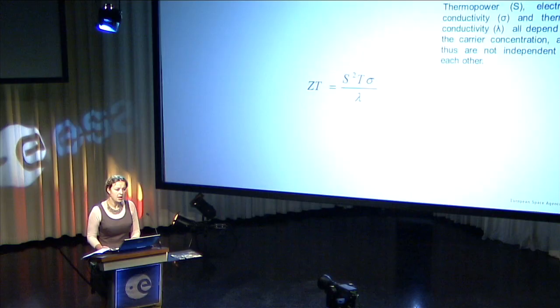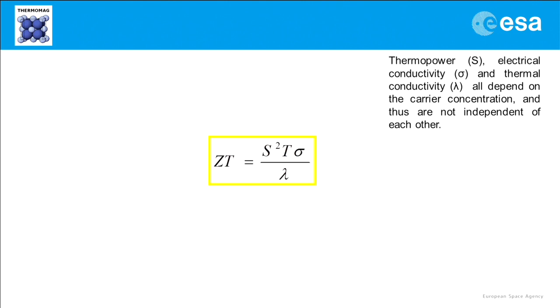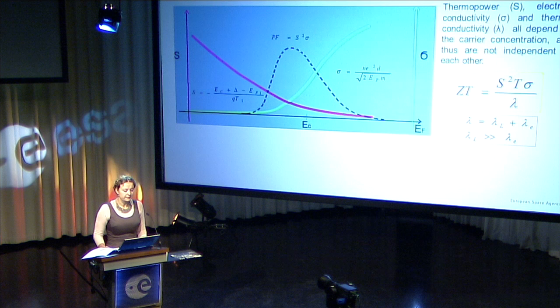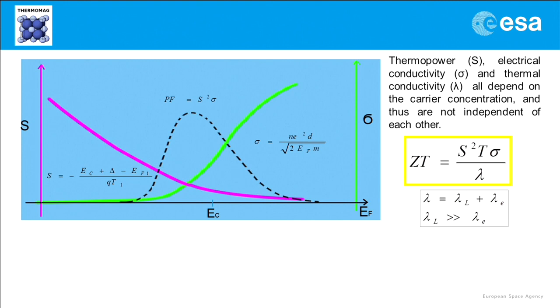Thermal power, electrical conductivity, and thermal conductivity all are dependent on carrier concentration, and thus they are not independent of each other. We get high Seebeck coefficient values when Fermi level is far below the conduction band. But to get good electrical conductivity, we need the Fermi level to be in the conduction band. There is some characteristic, so-called power factor, which gives us optimal values for Seebeck and electrical conductivity. And we get the maximum power factor when the Fermi level lies close to the edge of the conduction band, but not yet in it.